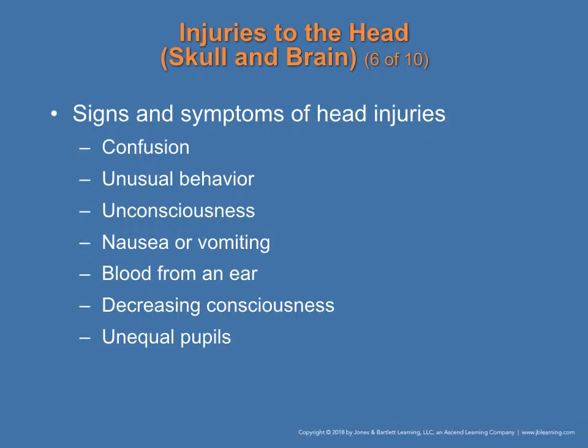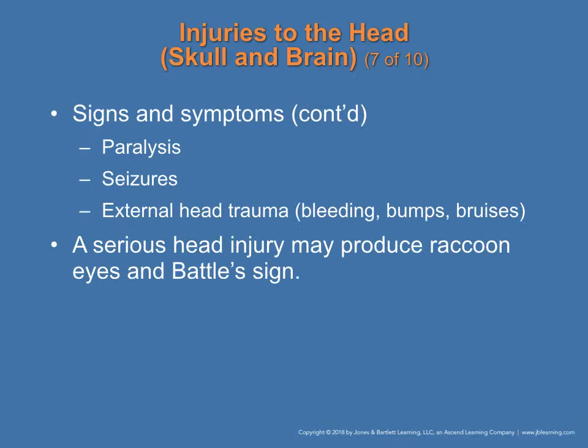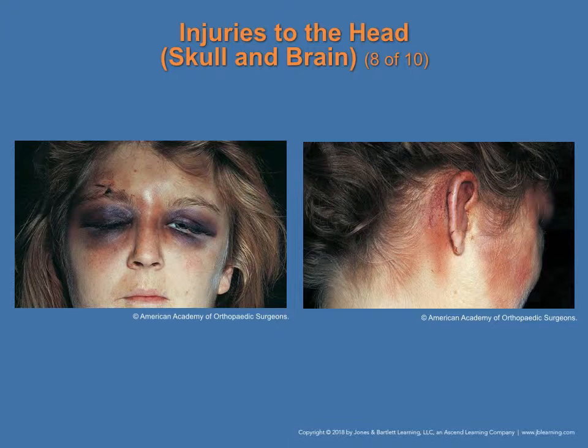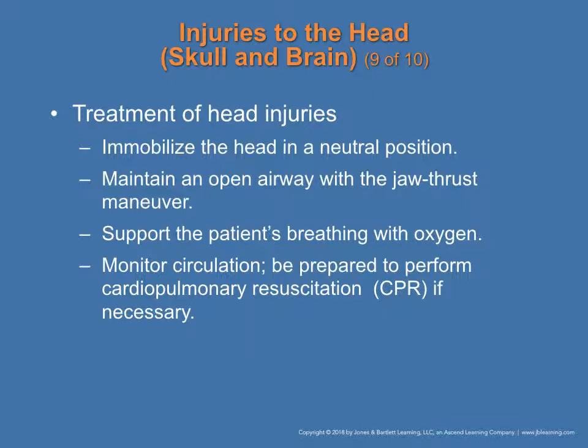Symptoms of head injury include confusion, unusual behavior, unconsciousness, nausea, vomiting, blood from the ear, decreasing consciousness, unequal pupils, paralysis, seizures, and external head trauma such as bleeding, bumps, and bruises. Serious head injury may produce raccoon eyes or Battle's sign. Raccoon eyes indicate bleeding beneath the periorbital tissue; Battle's sign is bleeding behind the ear. Both are evidence of possible basilar skull fracture.